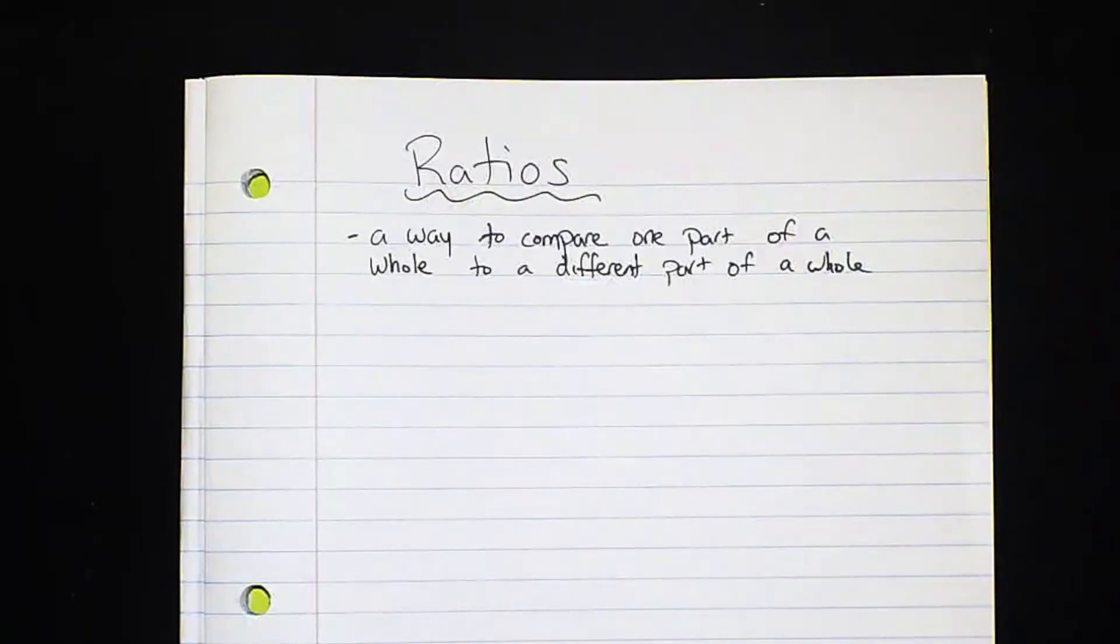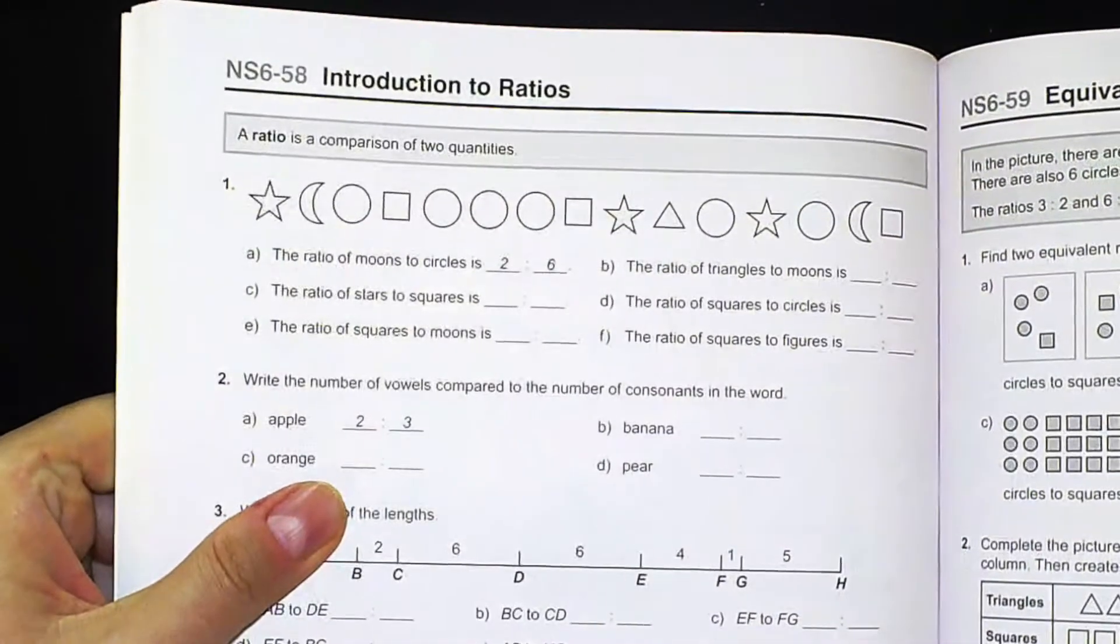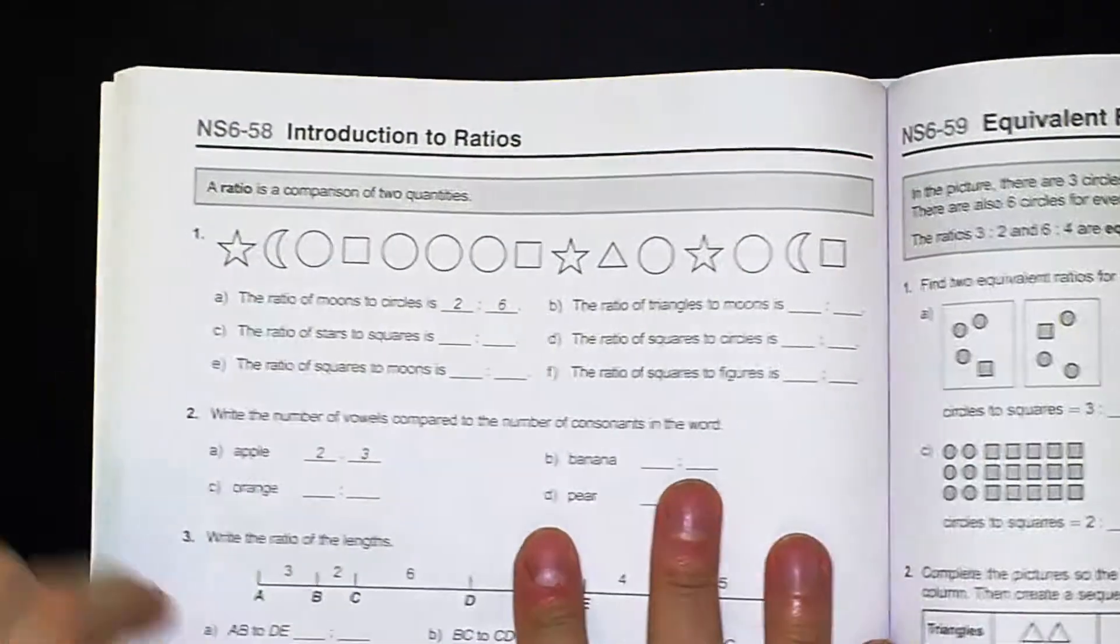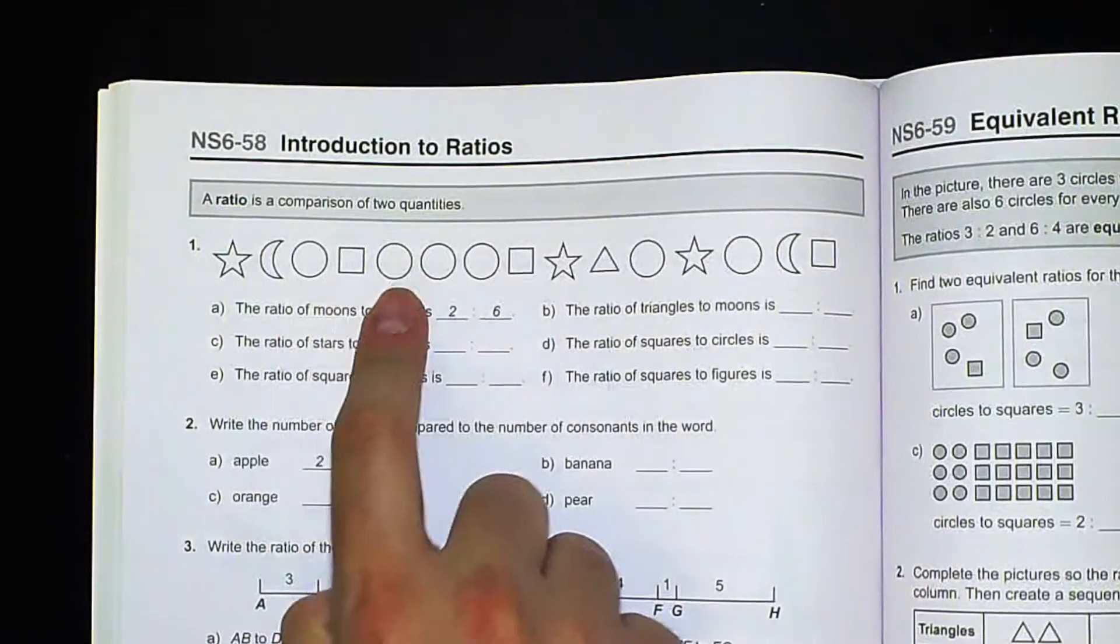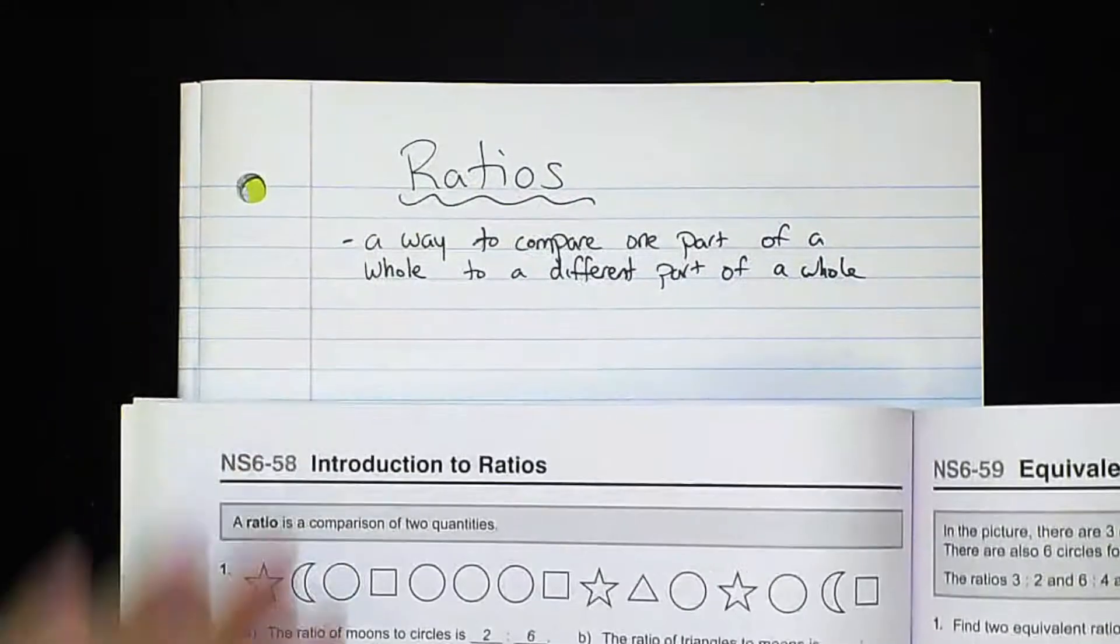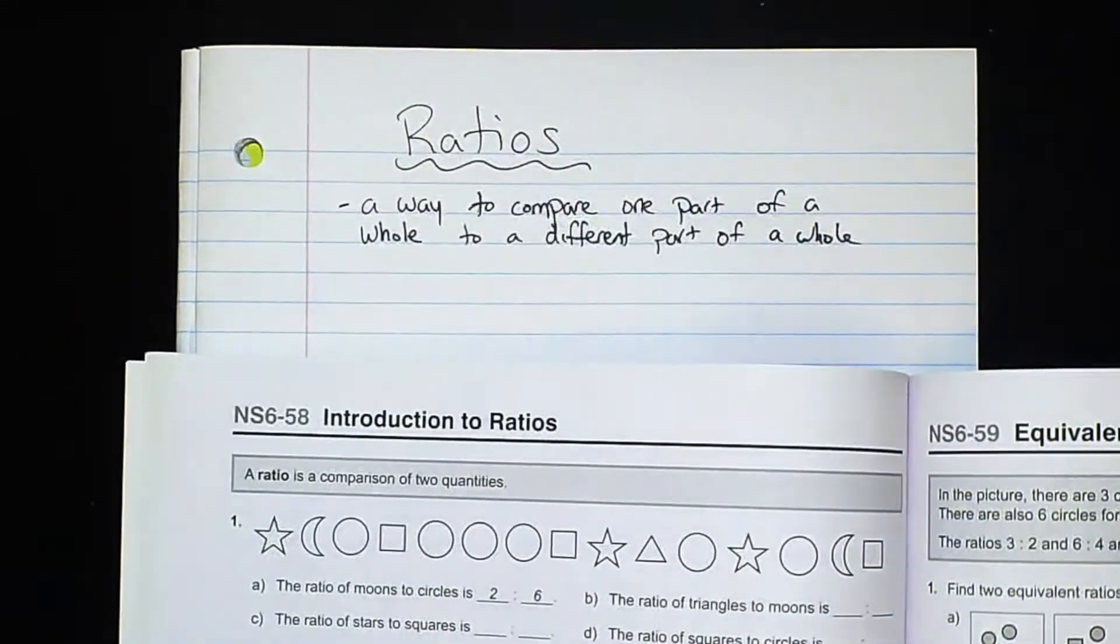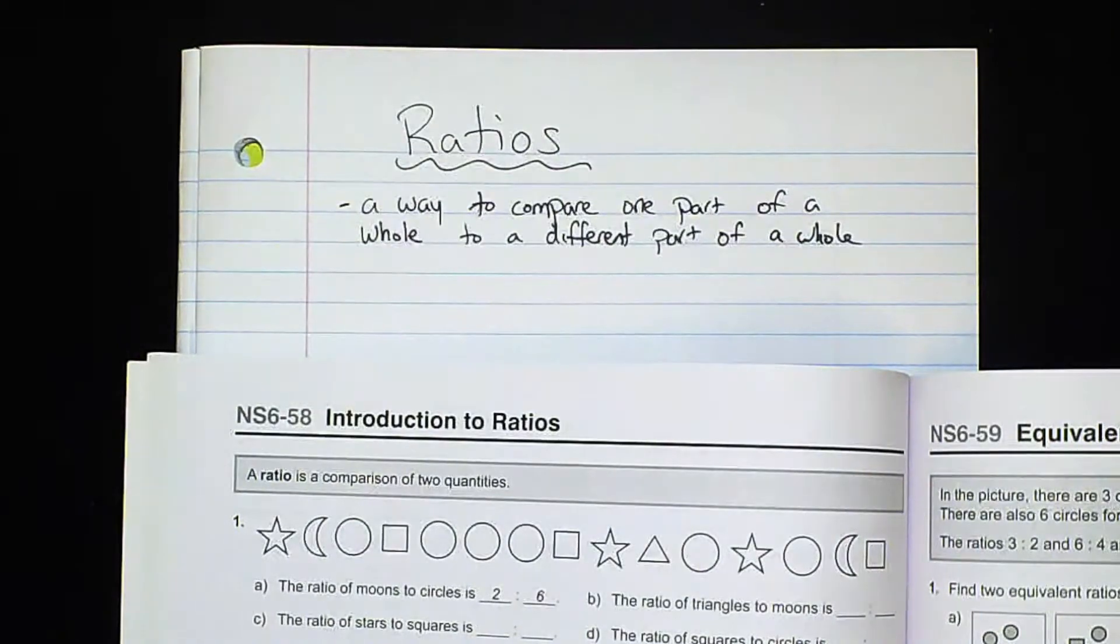Today's lesson is going to look at ratios. So this is our first lesson on ratios. I'm going to show you an example from our book and you're going to see here that the ratios are a comparison of two quantities. Now earlier I wrote down that it's a way to compare one part of a whole to a different part of a whole.